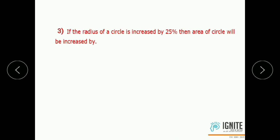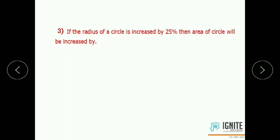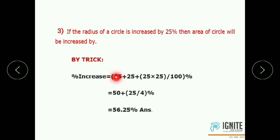Third question: If the radius of a circle is increased by 25%, then the area of the circle will be increased by how much? A circle is also a two-dimensional figure. The answer is 25 plus 25 plus 25 into 25 by 100%, which equals 56.25%. The percentage change in area is 56.25%.